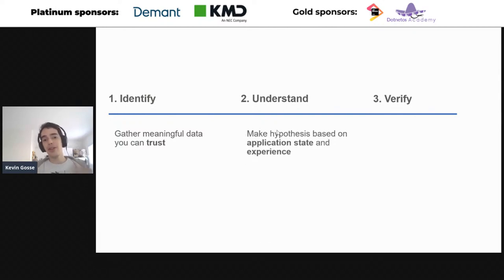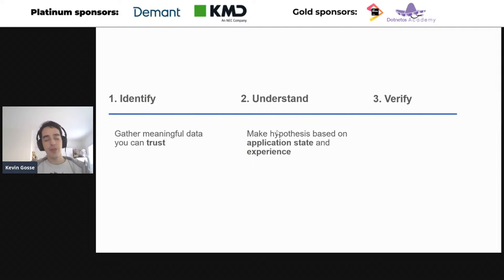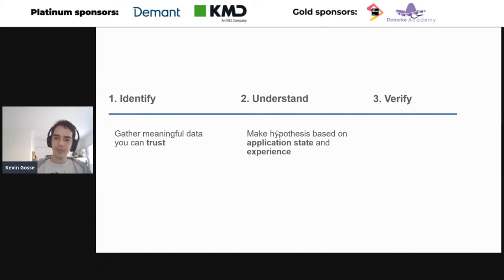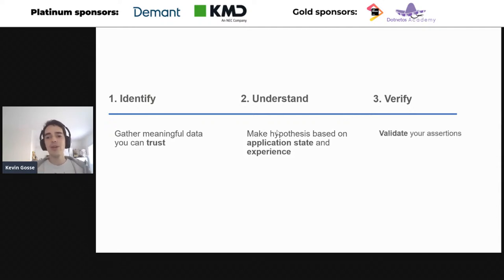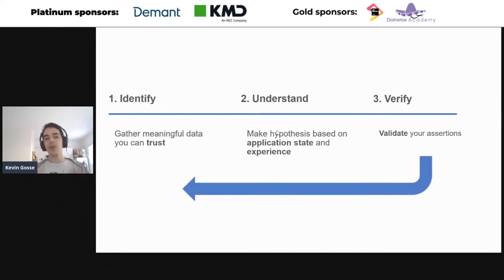When you have the data, you still need to understand it — basically, you need to make theories about what is happening. This is the most difficult step because it's a creative step. You won't find a to-do list online explaining step-by-step how to make theories. Experience is going to help you a lot here. The last step, which we tend to neglect but is very important, is to verify your theory. Validate every single assertion. More often than not, you will discover that your theories are actually wrong — and that's okay. By discovering why they're wrong, you gather more data, allowing you to repeat the cycle, refining theories until you crack the case.